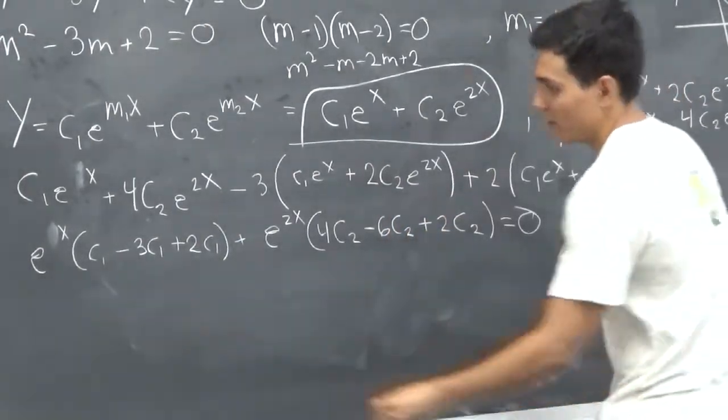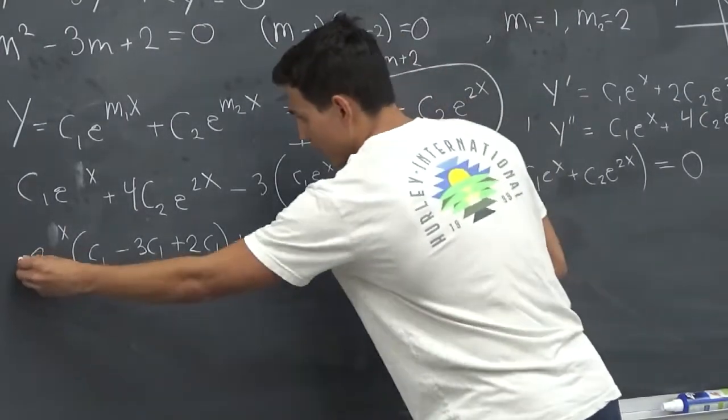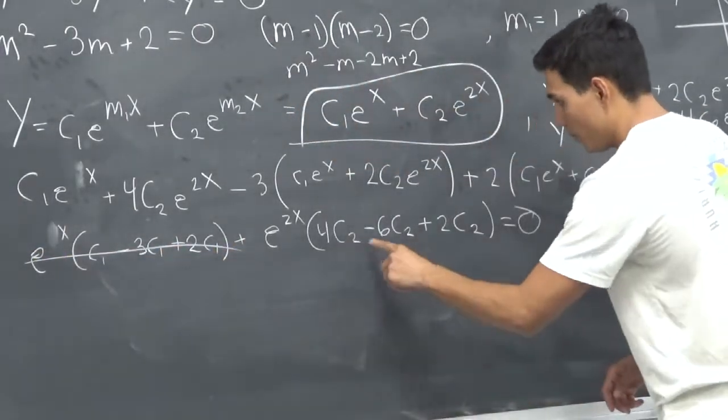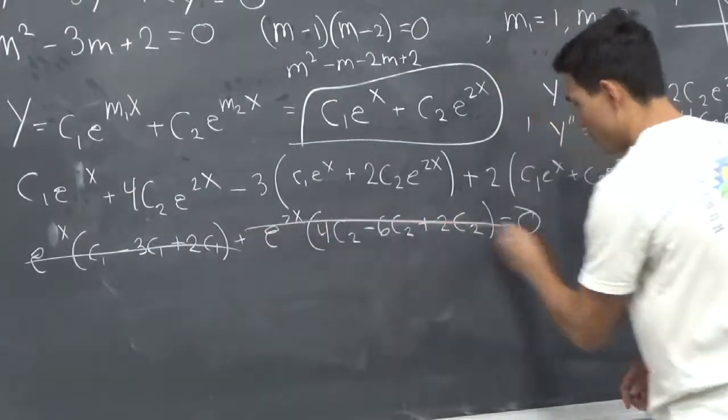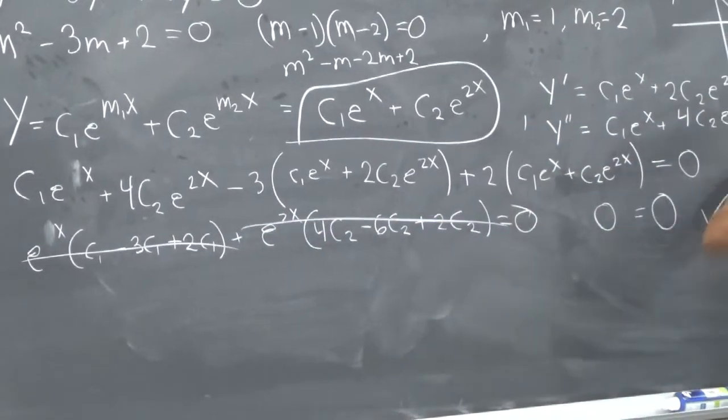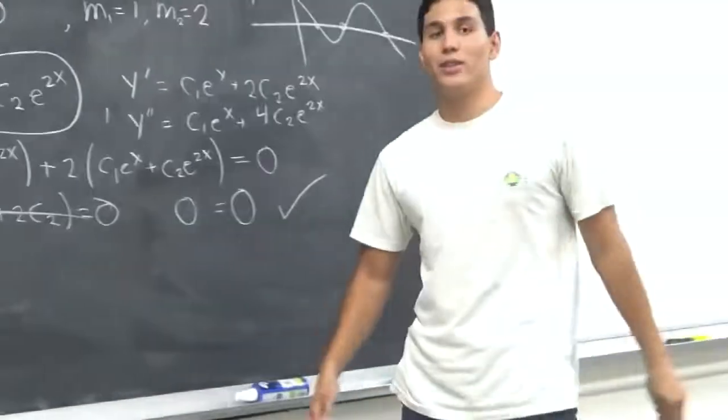And look at that. 1 minus 3 plus 2 is 0. 4 minus 6 plus 2 is 0. 0 equals 0. Thus our solution is true. You could end it there.